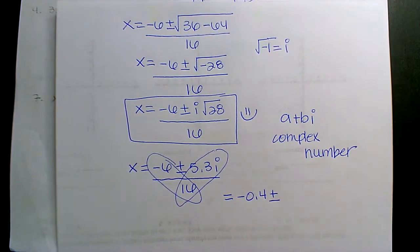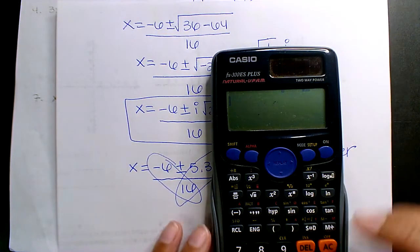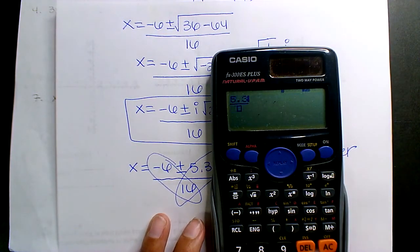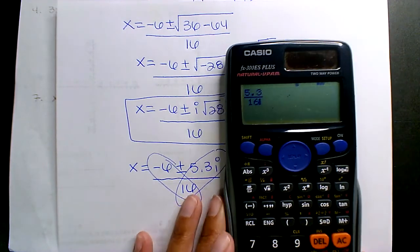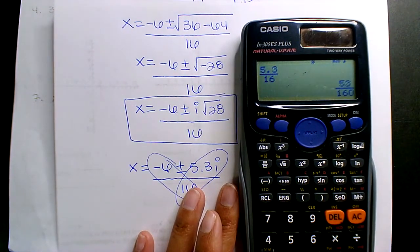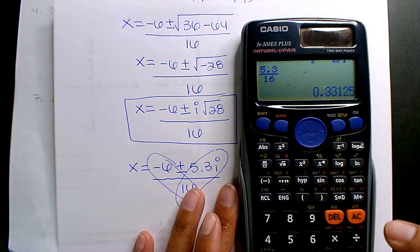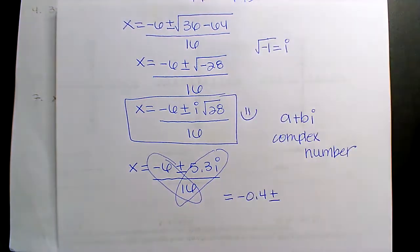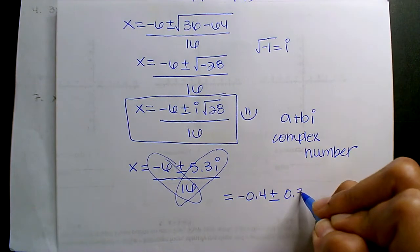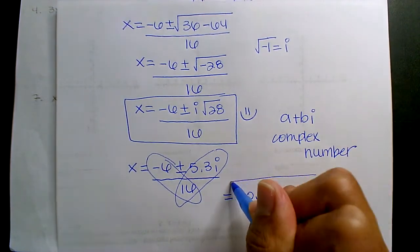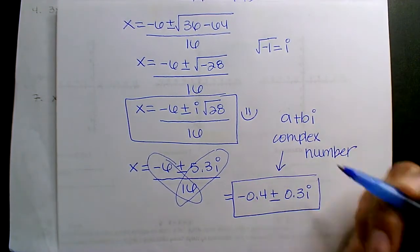Plus or minus, and what's 5.3 divided by 16? 0.3. 0.3i. And so this is that complex number.